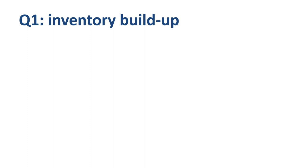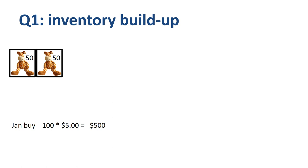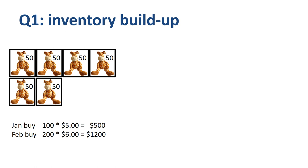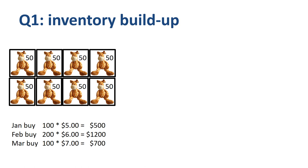In the first quarter of the year, Toy Giraffe Inc. is building up its inventory. In January they buy 100 units packed in two boxes of 50 units each, at $5 per unit. In February, 200 units at $6 per unit. In March, another 100 units — two boxes of 50 units — at $7 per unit. As you see, the cost per unit for toy giraffes is going up fast. The Q1 ending inventory is 400 units at a total purchase price of $2,400, so on average $6 per unit.